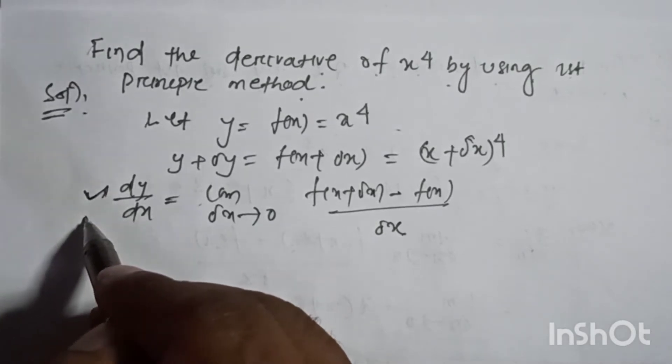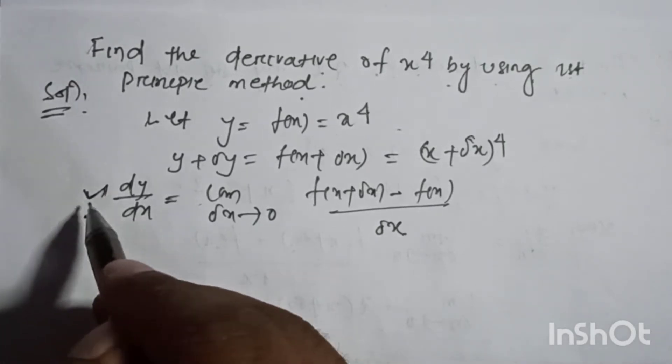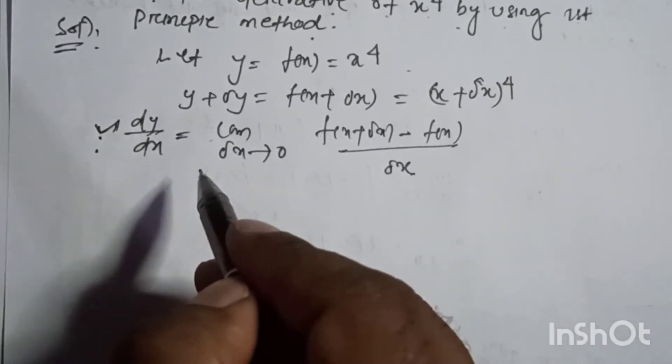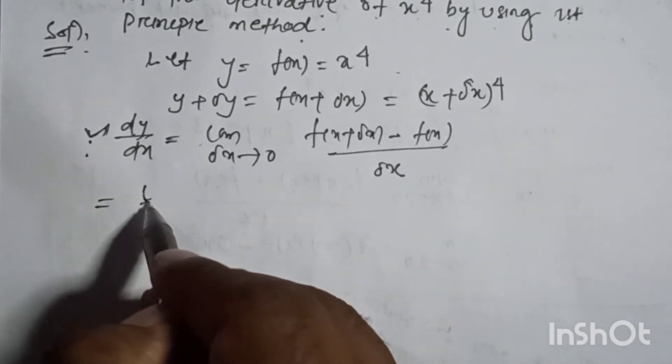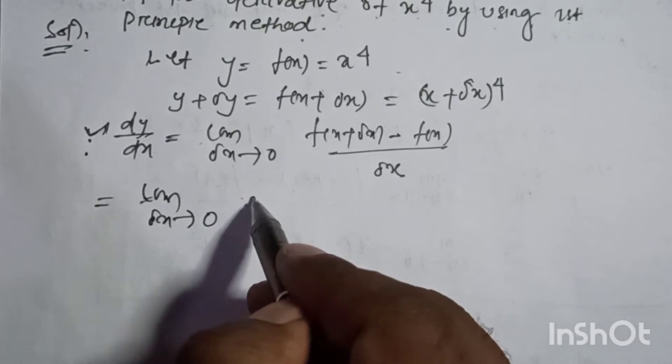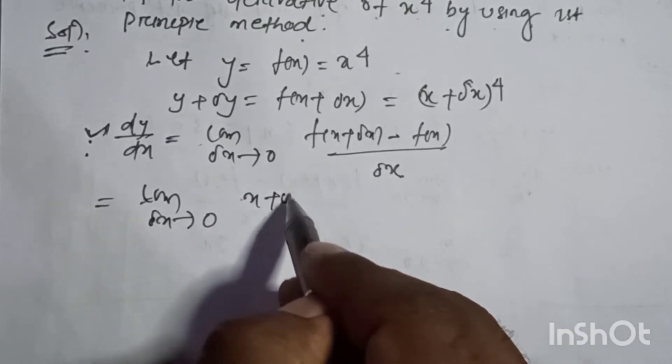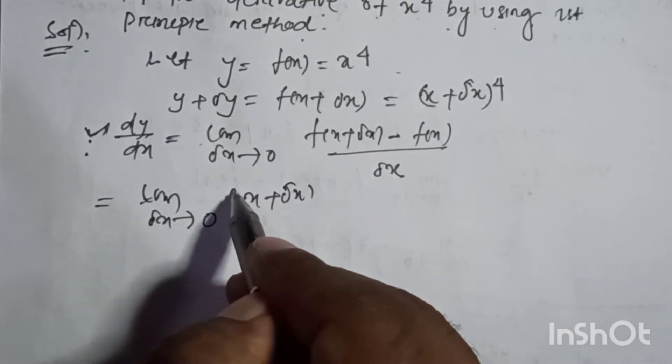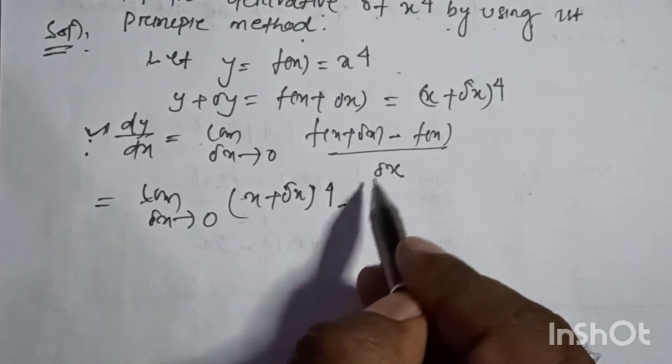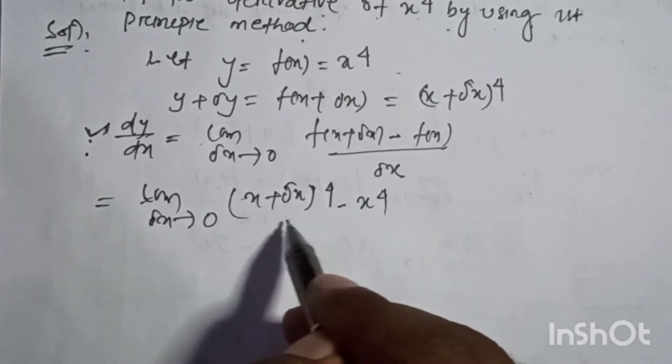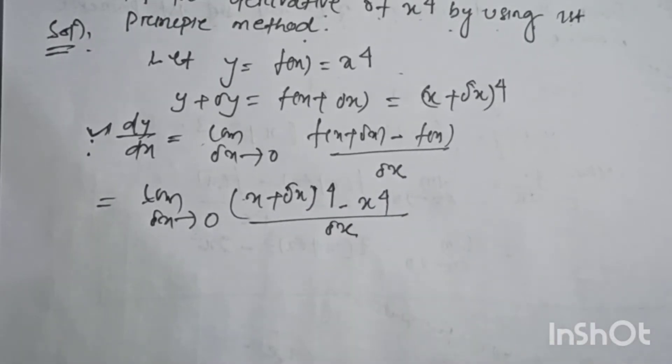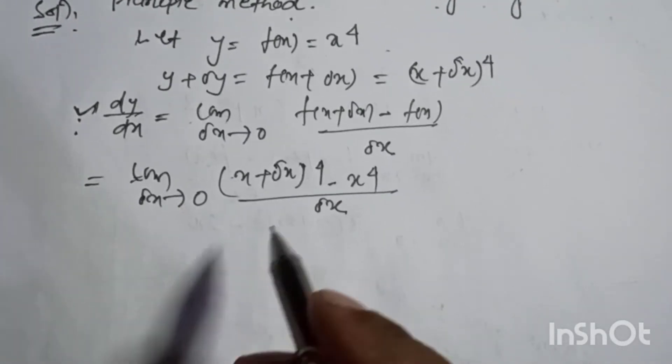By applying the first principle method formula, the limit as del x tends to 0 of x plus del x to the power 4 minus x to the power 4 divided by del x.